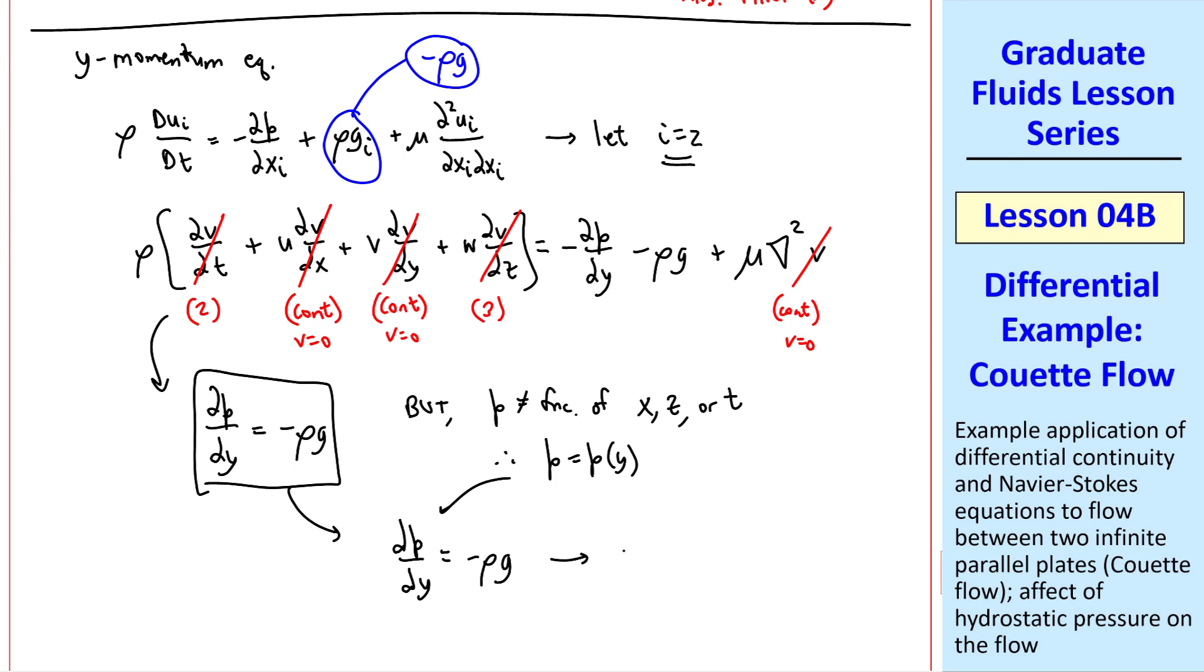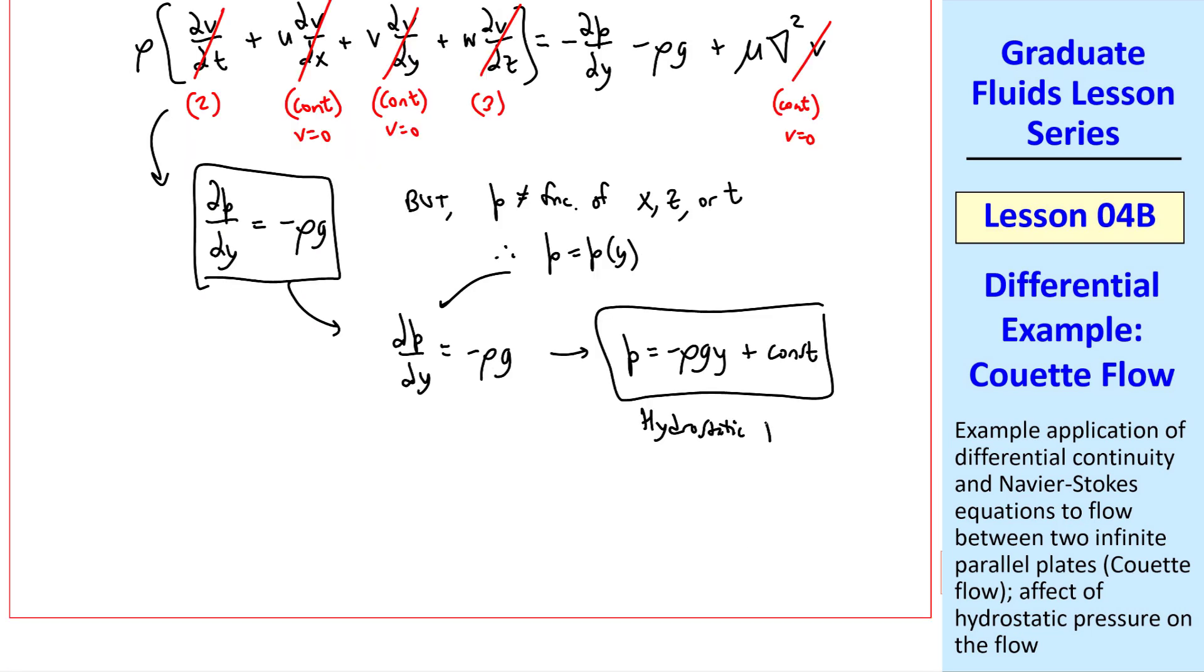So this equation can be rewritten as dp dy is minus rho g, where we just use a total derivative d instead of a partial derivative del, since p is only a function of y. Well, this can be integrated easily. Since rho and g are both constants, p is minus rho g y plus a constant, which is just a hydrostatic pressure. Again we apply a boundary condition, namely at the lower wall we let p equal p sub w. Plugging in y equals zero, this term goes away, and this constant is therefore equal to p w. So finally, p equals p w minus rho g y. This is our answer to part b.